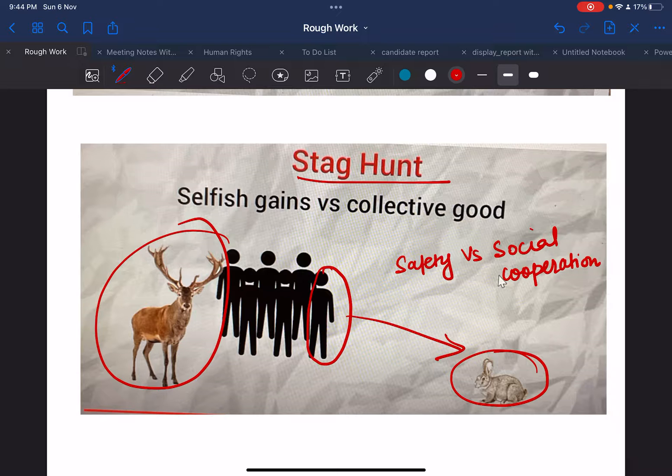If an individual hunts a stag, he must have the cooperation of his partner in order to succeed. It's a big hunting game. An individual can get a hare by himself, but a hare is worth less than a stag, because a stag can fill up the tummy of everyone. This is a game of selfish gains versus collective good.